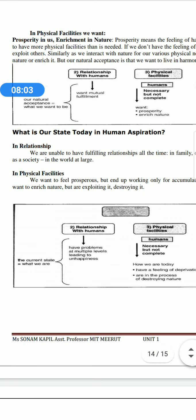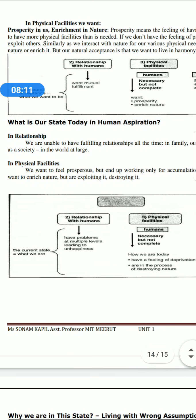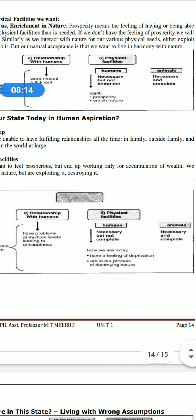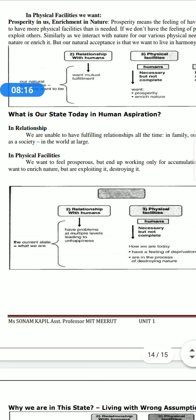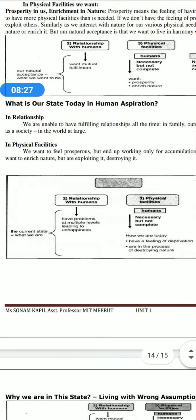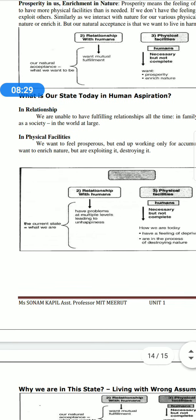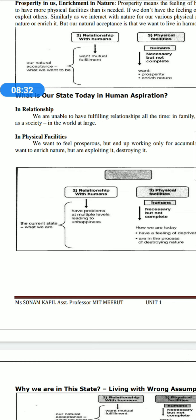Then what is our state today regarding human aspiration? In relationships, we are unable to achieve fulfillment all the time — in family, outside family, and society at large. The relationship is very wide. In physical facilities, we want to feel prosperity but end up working only for the accumulation of wealth. We want to enrich nature but are exploiting and destroying it. We want to take from nature, but what do we do in return? We are taking something from nature and not giving back.